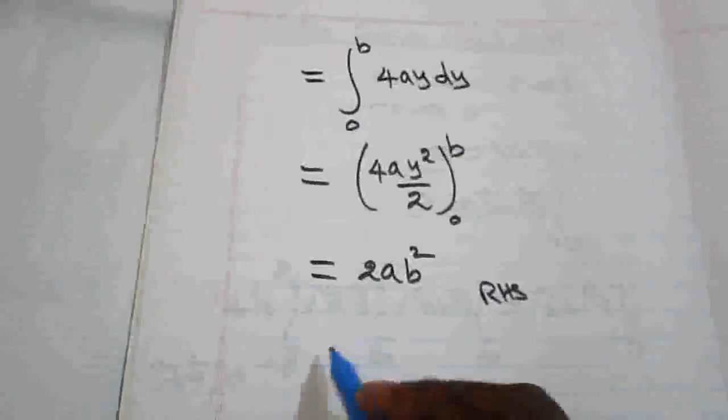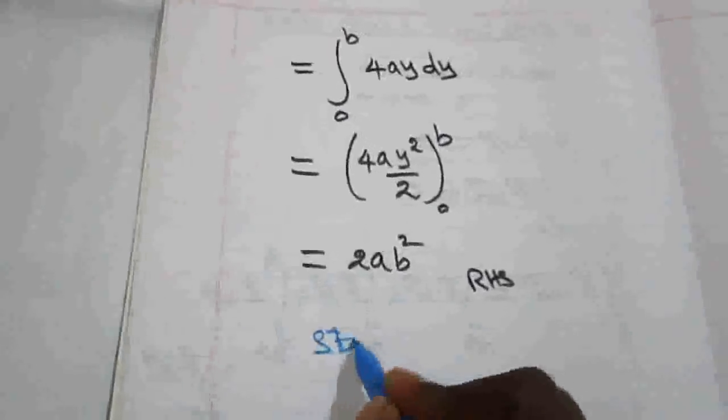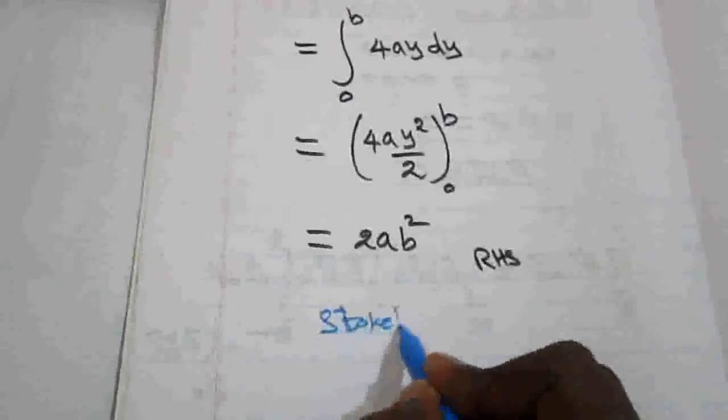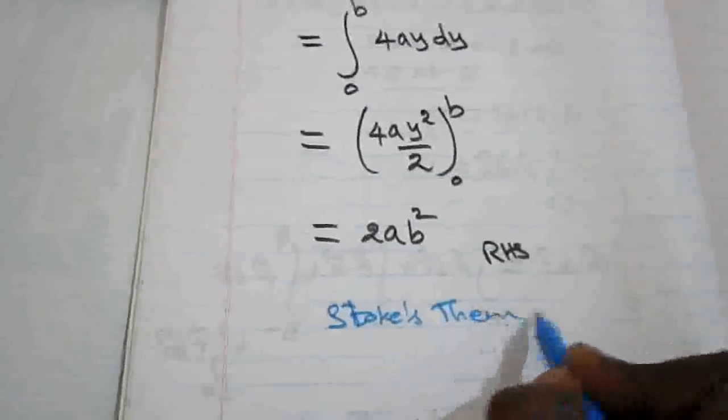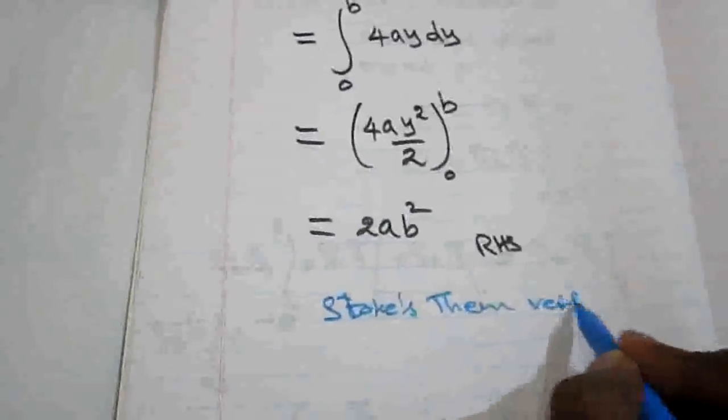Since LHS = RHS = 2ab², Stokes Theorem is verified.